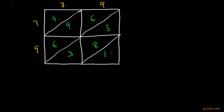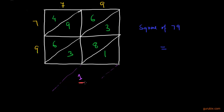Now we shall start adding these digits diagonally. In the lowest diagonal there is nothing to add with the 1, so the sum of the lowest diagonal is 1. We underline this 1. The unit digit of the square of 79 will be 1 because the lowest diagonal sum is 1.